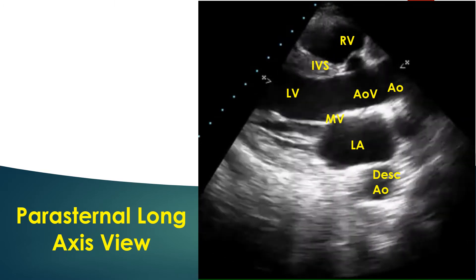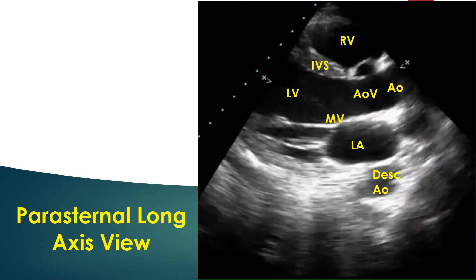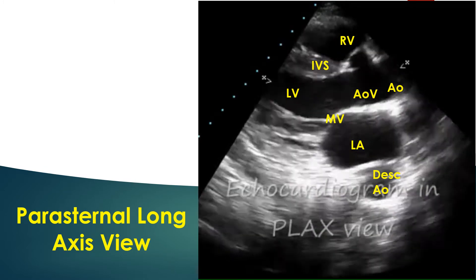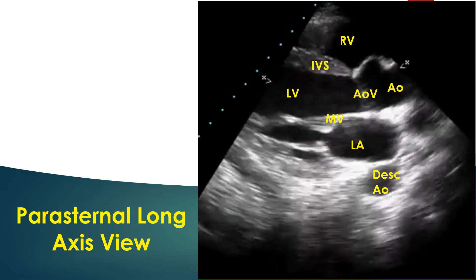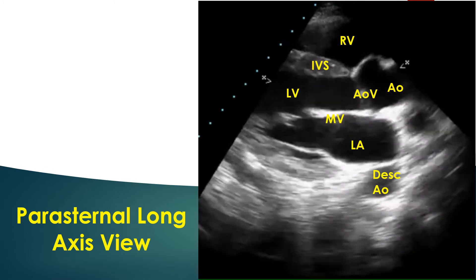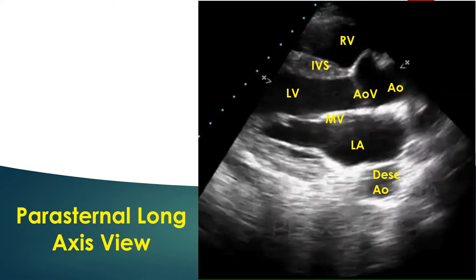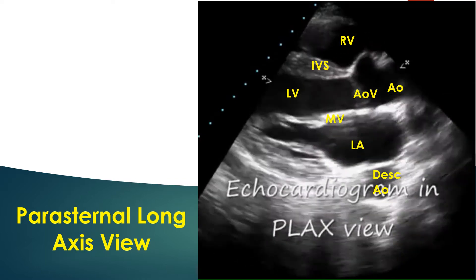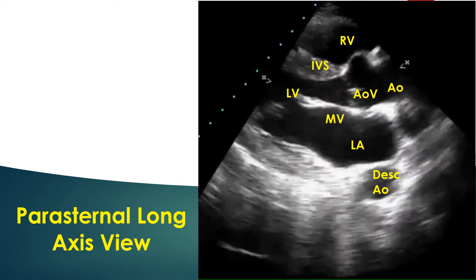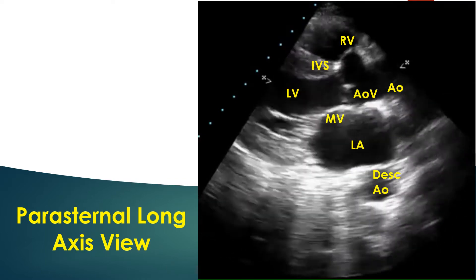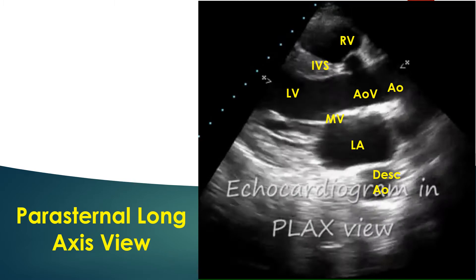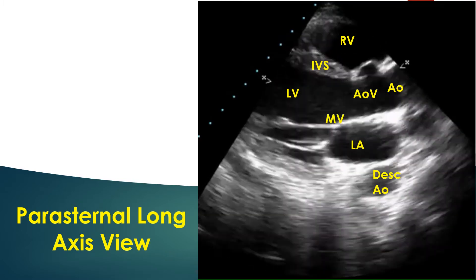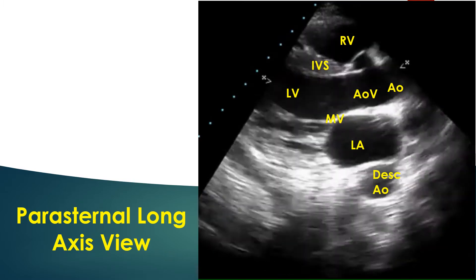Aortic root and valve, left ventricle, left atrium, mitral valve, chordae tendineae, papillary muscles, and interventricular septum, as well as part of the right ventricle, are imaged in this view.